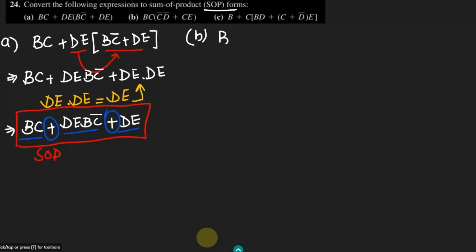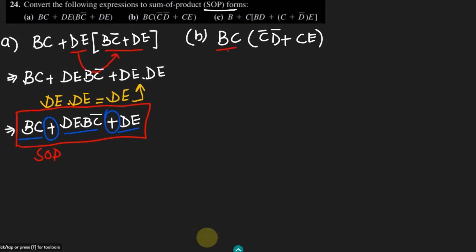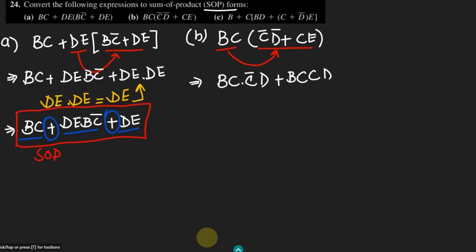Similarly, now let me solve part B here. In part B we have BCC prime D prime plus CE. What we have here again — we have this term and let me multiply it with all the terms which are inside this bracket. It would be BC dot C prime D, and similarly BC dot CE.